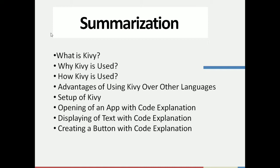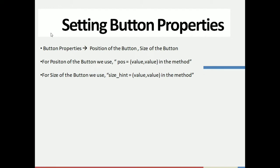In the last tutorial we ended by creating a button which took up the full page. Now we will see how we are going to alter the button into a smaller format. To do that, we are going to set the button properties in the method.